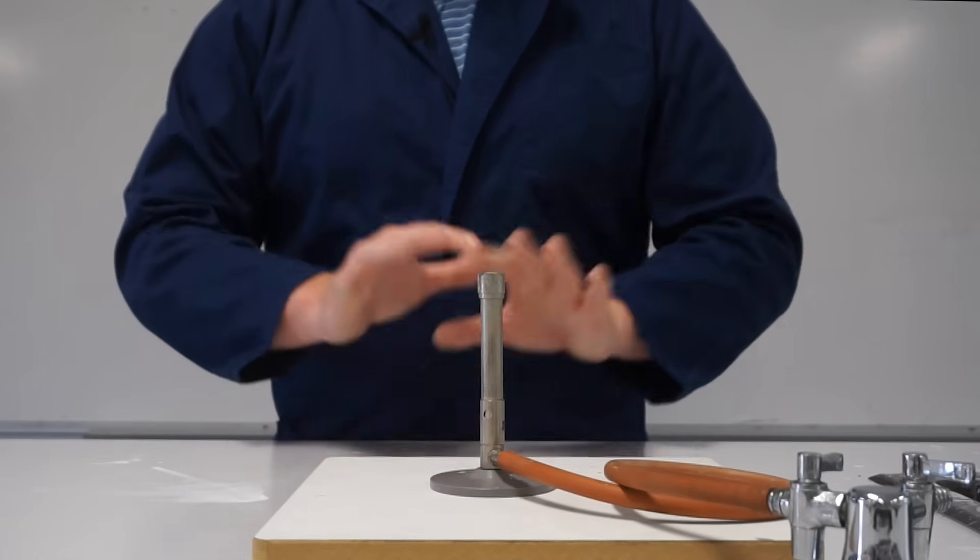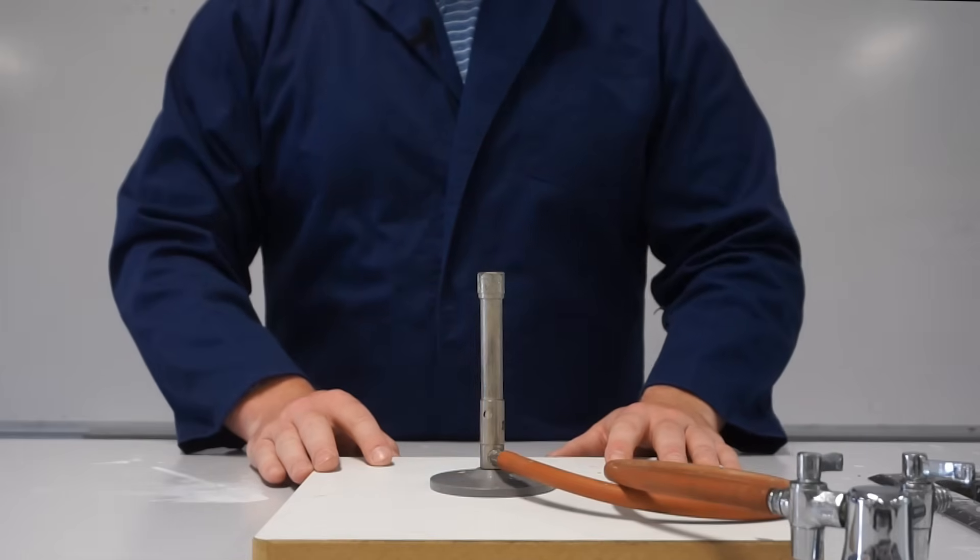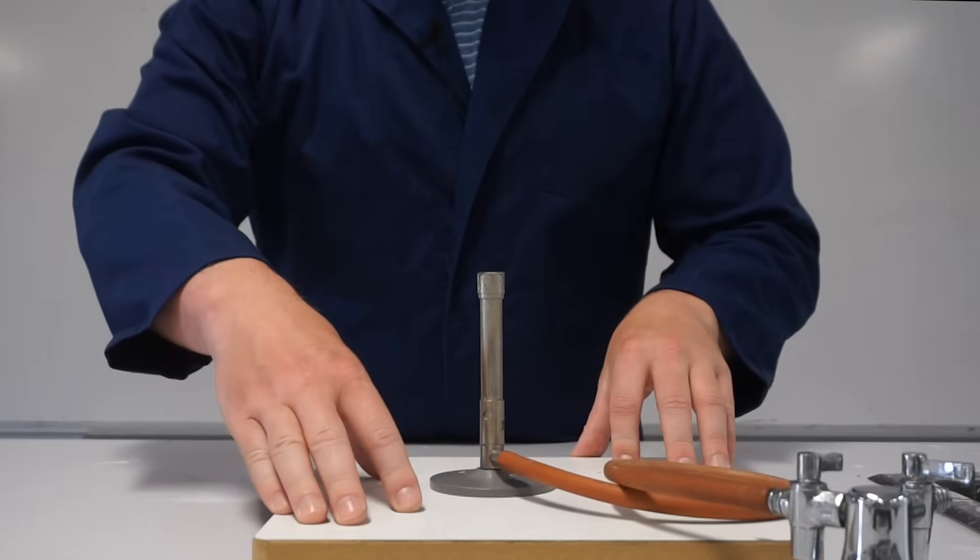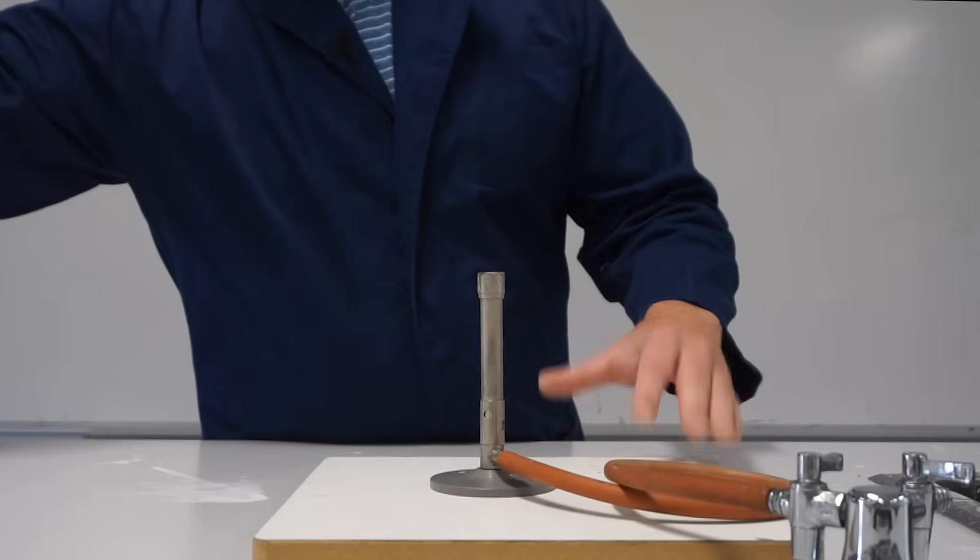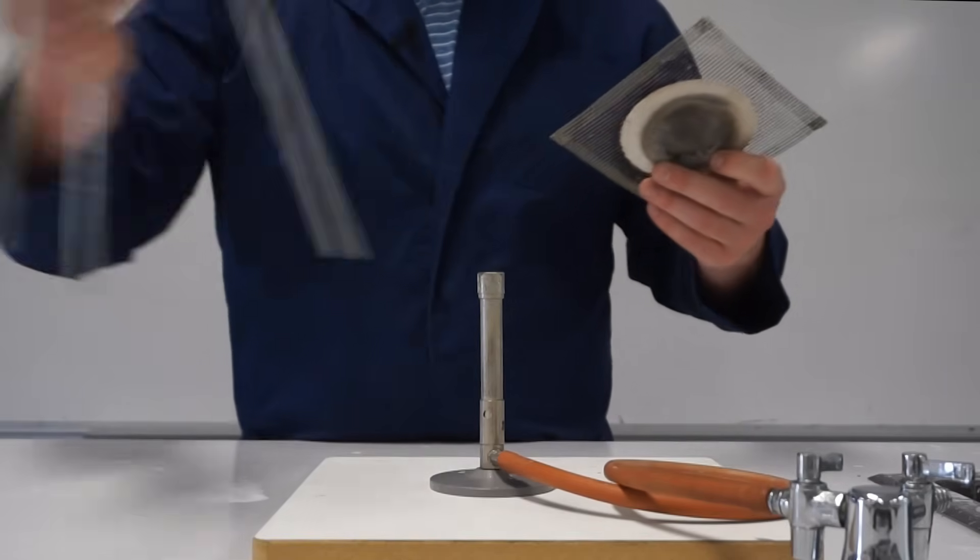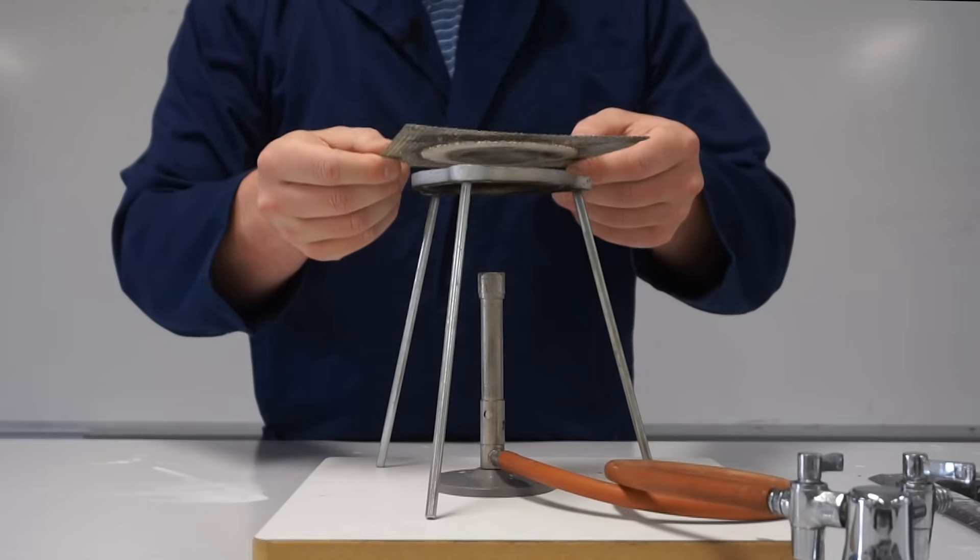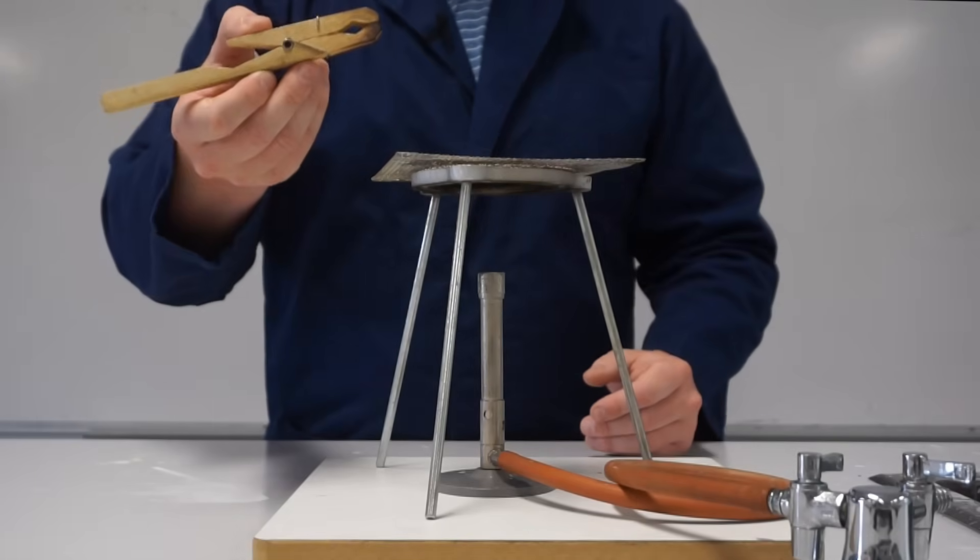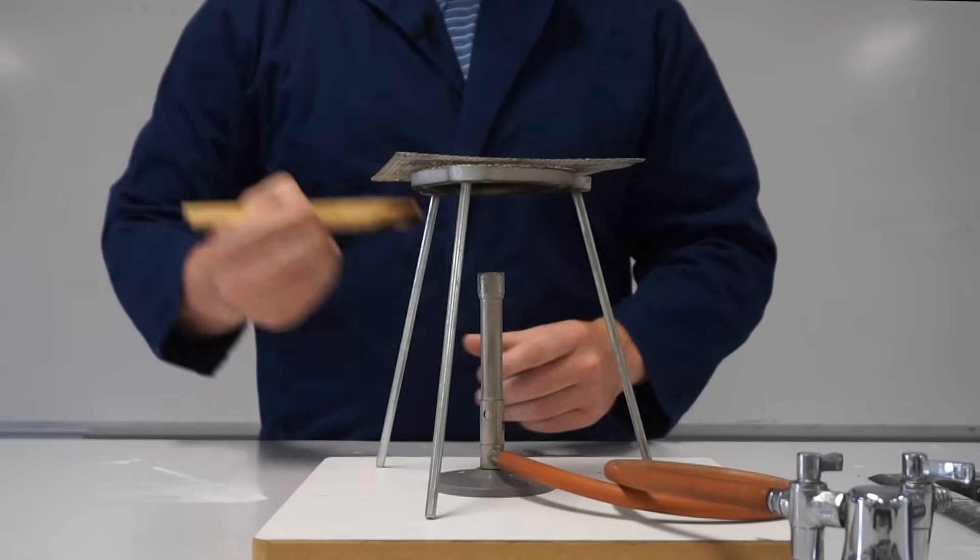Also ensure that you've gathered all of the other equipment that you'll need for this experiment. That could include your heat proof mat, a gauze mat and a tripod if you're heating up things such as beakers, and also a peg if you want to hold something above the flame.